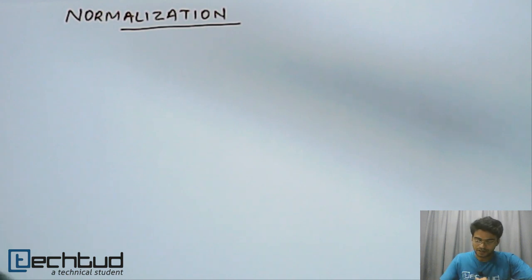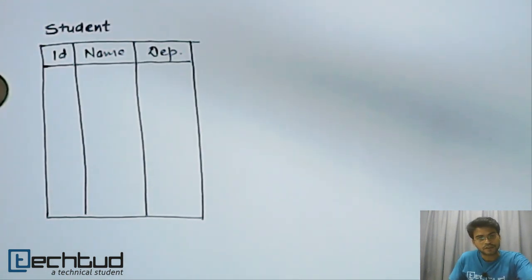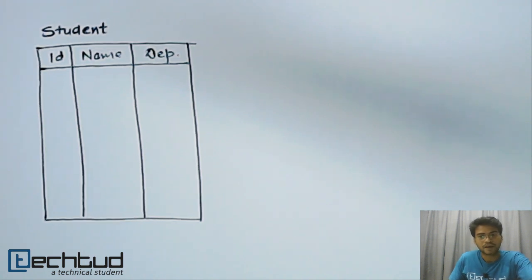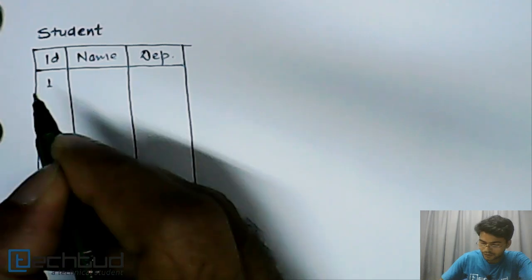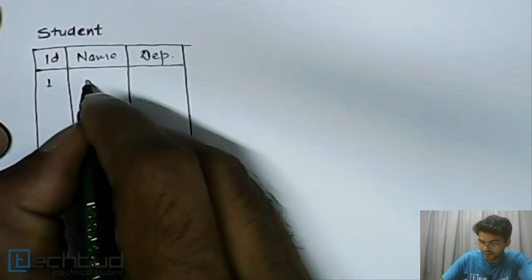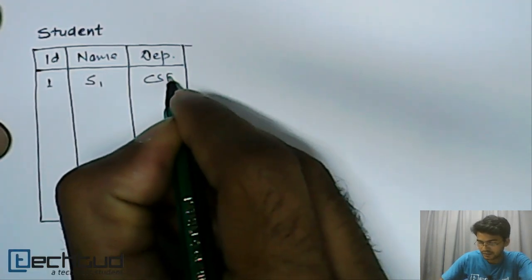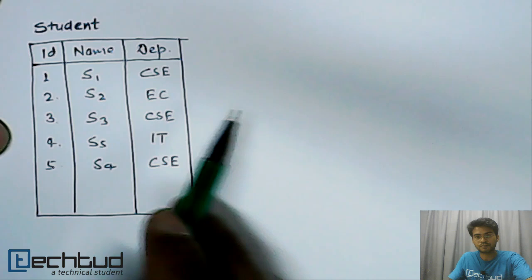Let's start with an example. Here we have a database of students in which we are storing student ID, name, and department name. There are five students, S1 to S5, with their corresponding departments.